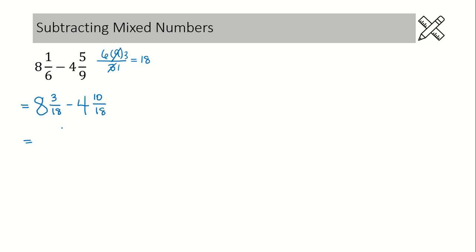If you look at your first fraction, you have a numerator of 3, and we cannot subtract a numerator of 10 — 3 minus 10 goes into the negatives. So what we need to do is borrow 1 from the whole number of 8 to add to this fraction to make the numerator large enough. Show that you're borrowing 1 from the 8 by crossing it out and underneath put 7.